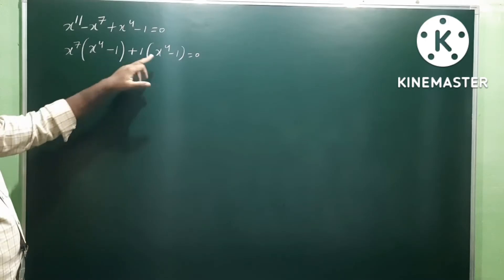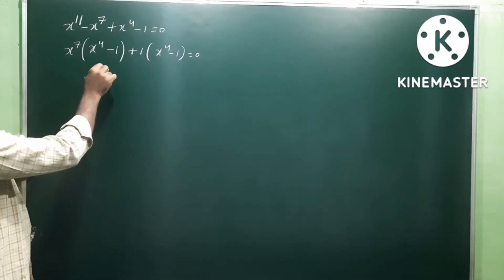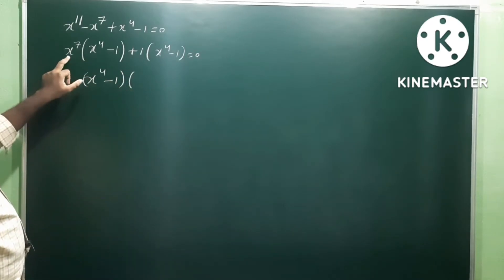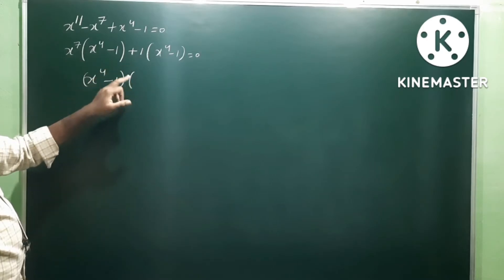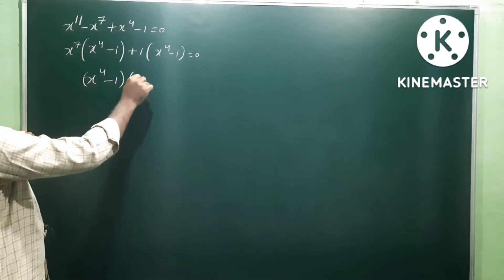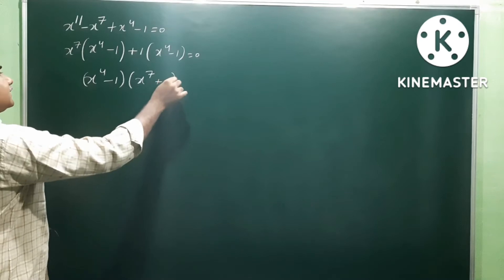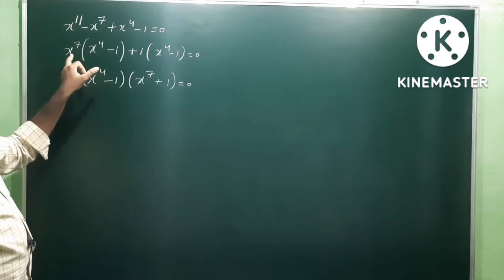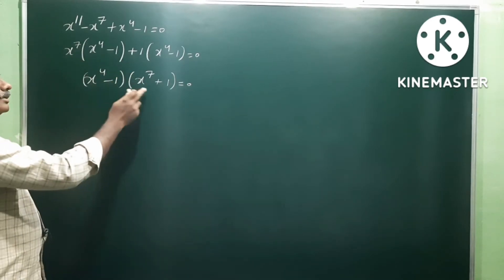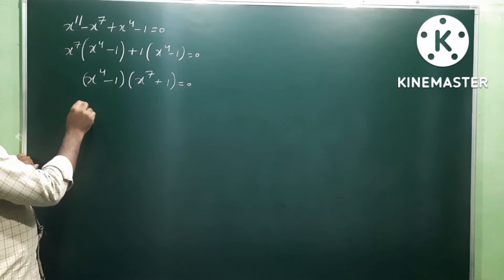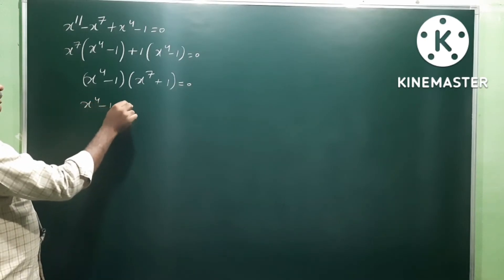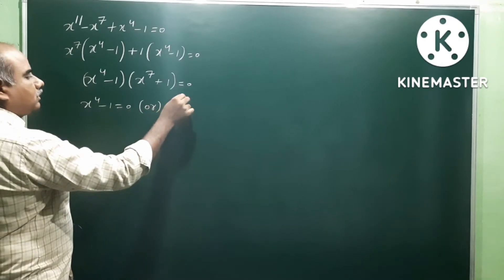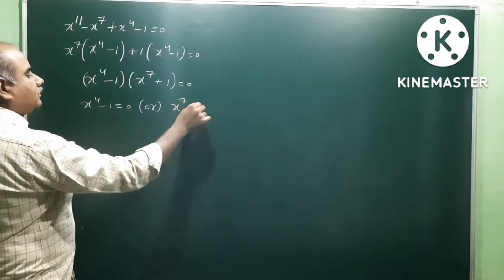The two brackets are the same: x power 4 minus 1 is the common factor. So we get x power 4 minus 1 into x power 7 plus 1. Since the two brackets are the same, the equation factors as x power 4 minus 1 equal to 0 and x power 7 plus 1 equal to 0.